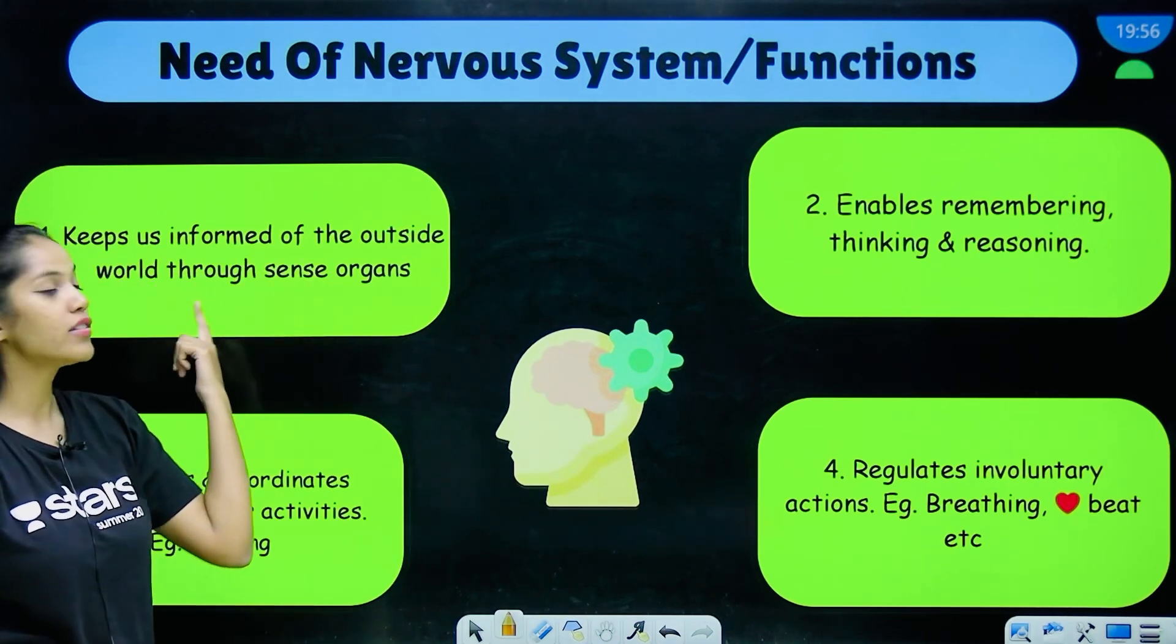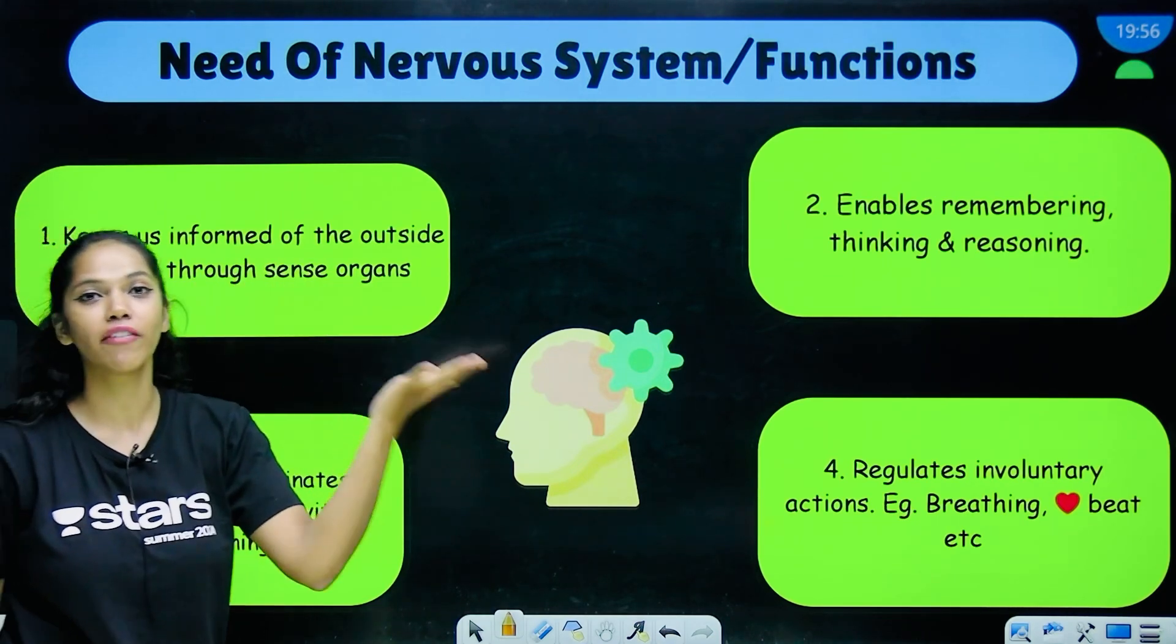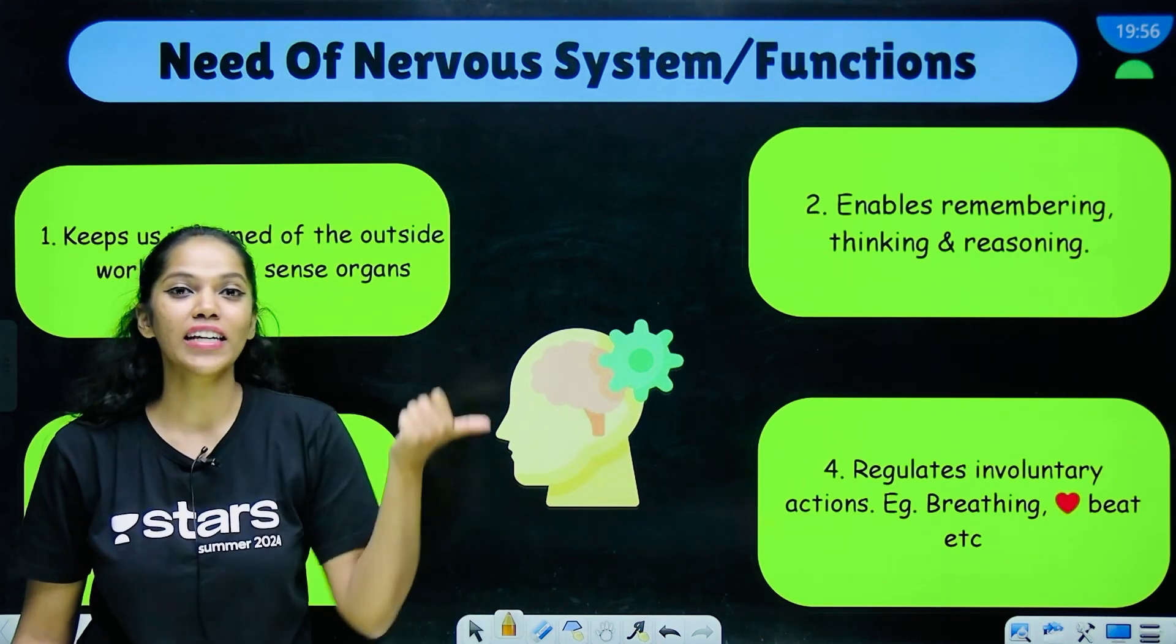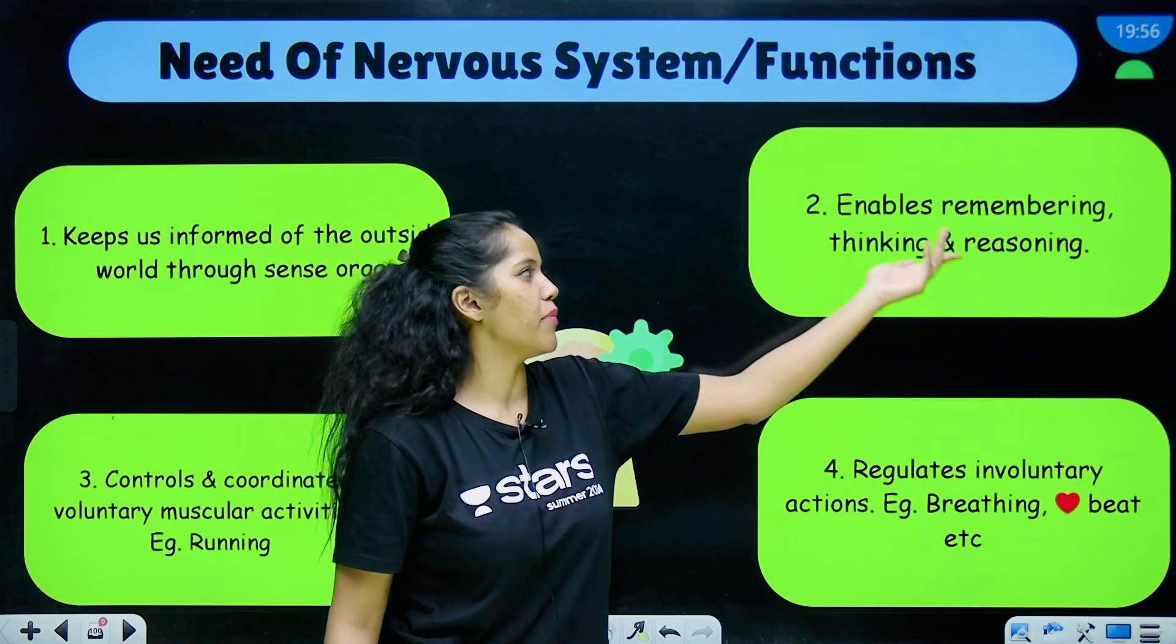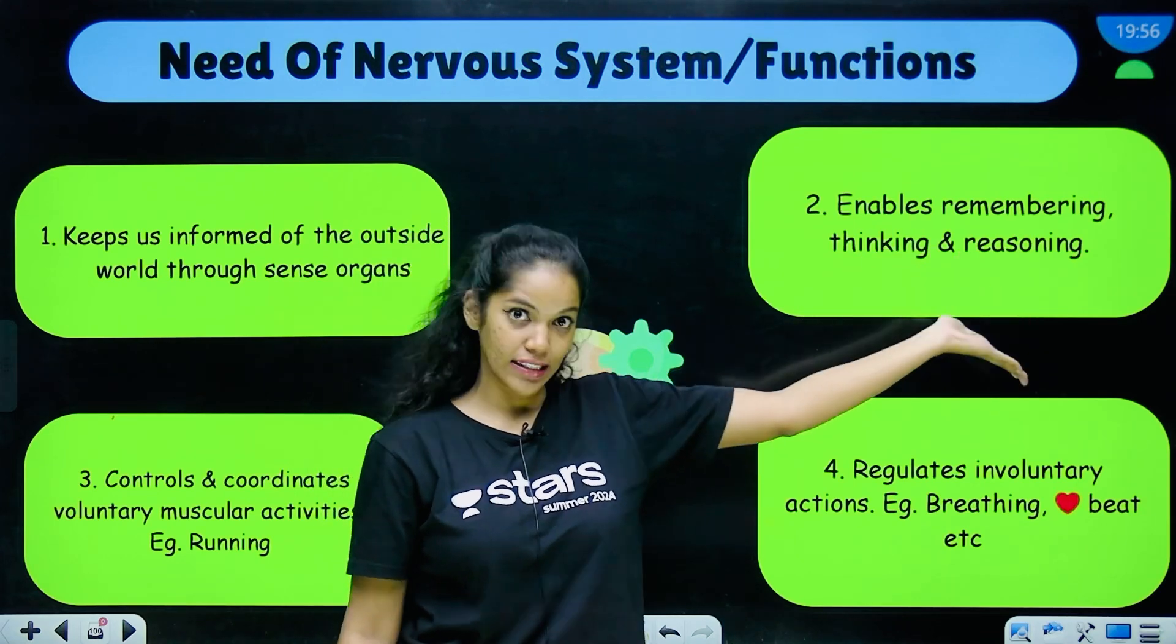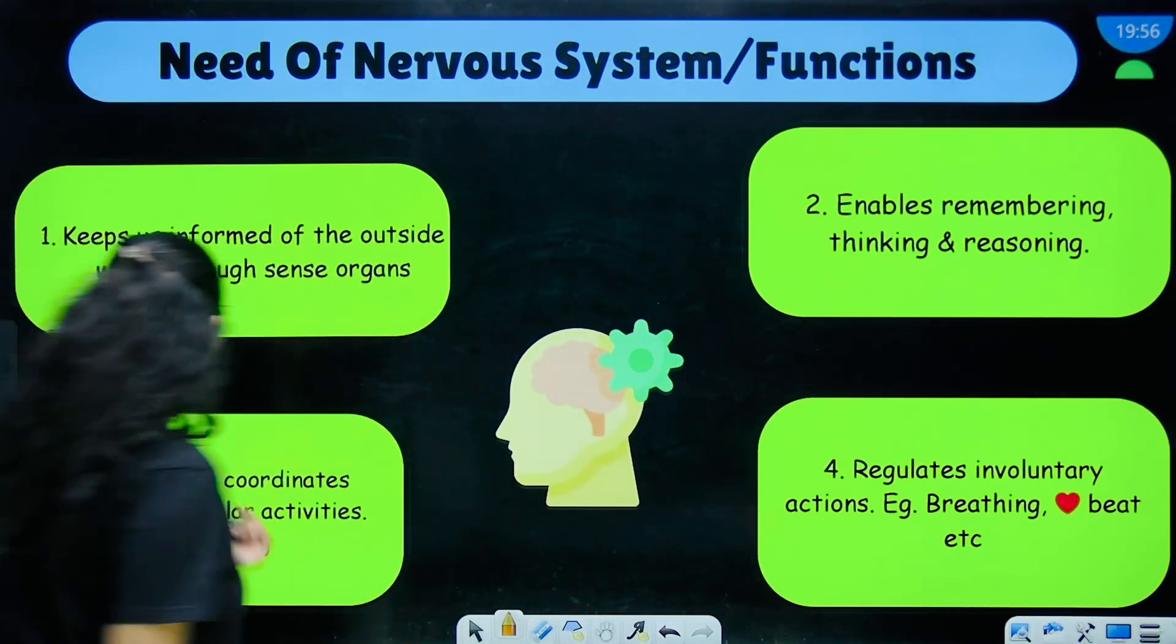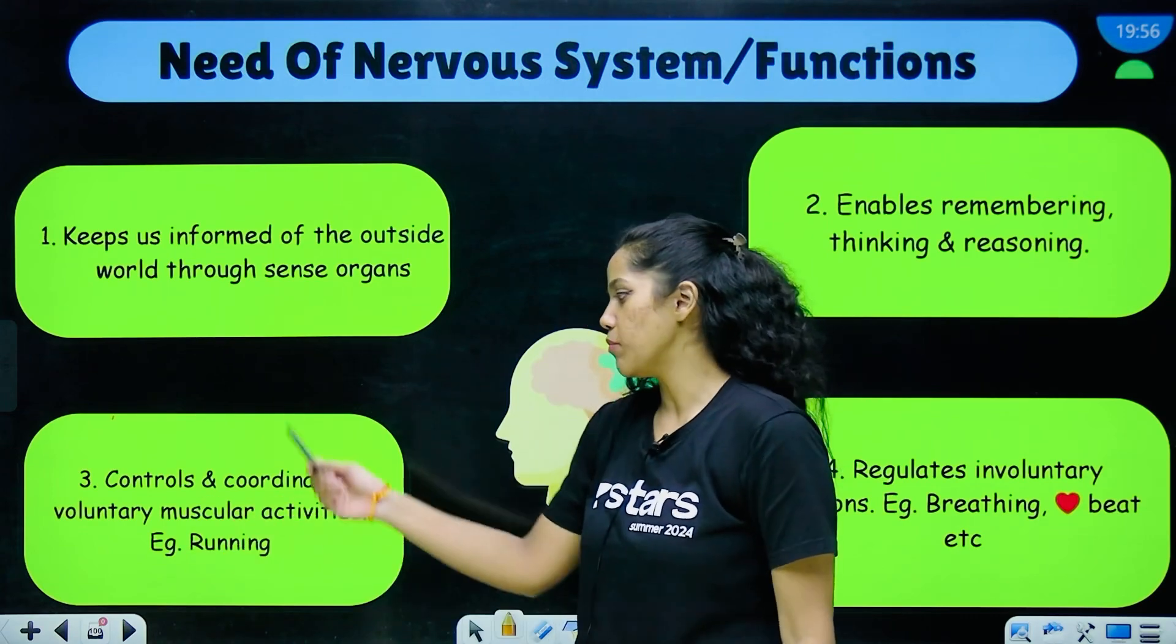Those are our five sense organs which is our skin, our eyes, our nose, our mouth and our ears. It enables remembering, thinking and reasoning. It controls and coordinates voluntary muscle activities, example running.